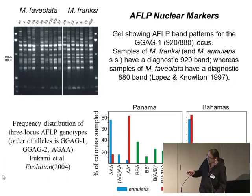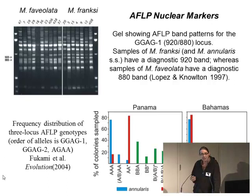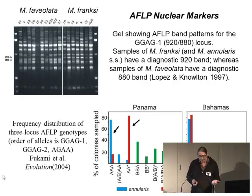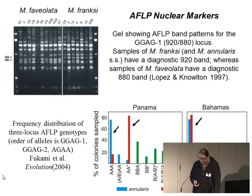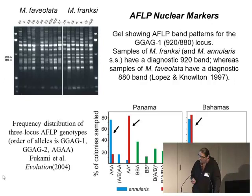Faveolata has the 880 band, and franksi and annularis have the 920 band. Annularis and franksi are more similar and a bit tougher to differentiate genetically. In Panama, they tend to exhibit strong frequency differences at a couple of genotypes. But in the Bahamas, this difference goes away — they're basically genetically indistinguishable. The Bahamas are on the edge of the Caribbean, and it's thought that introgressive hybridization might have occurred there.